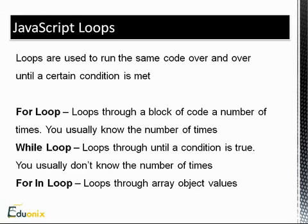So loops - loops are used to run the same code over and over until a certain condition is met. And there's a couple different kinds of loops. In JavaScript, we have the for loop, the while loop, and the for in loop, which is usually used for arrays. We also have the do while loop, but it's not used too much. I don't think I've actually ever used it. But that's something that you can look up if you want.